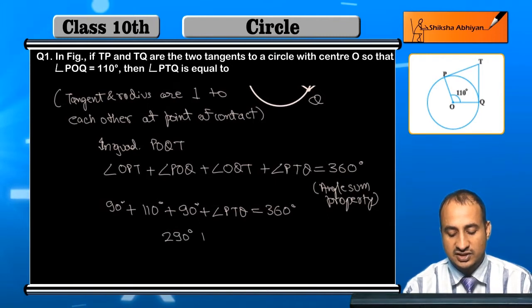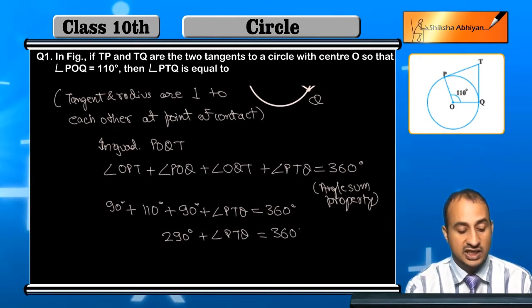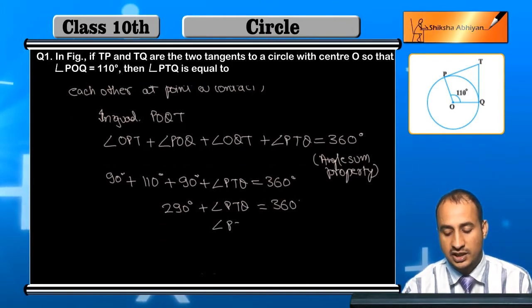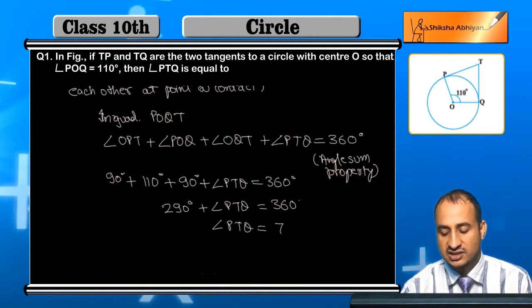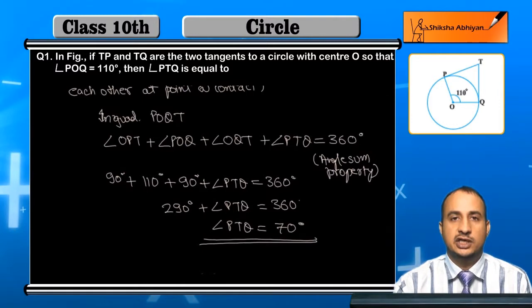So 290 plus angle PTQ is equal to 360 degrees. And when you subtract from this degree, angle PTQ equals 70 degrees. Hence, this is the value for the angle PTQ.